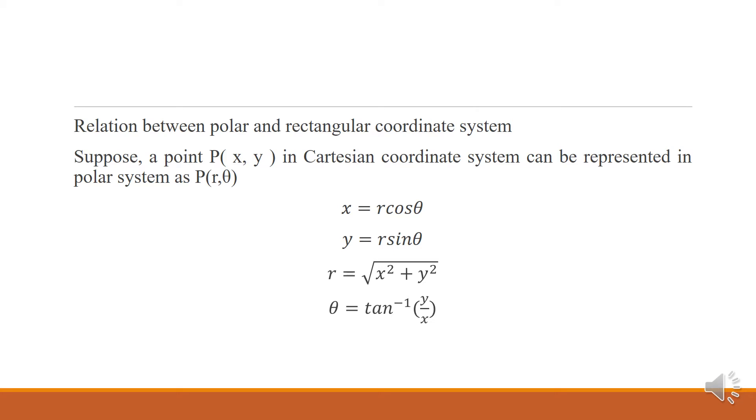So at the very first, relation between polar and rectangular coordinate system. Suppose a point in Cartesian coordinate system, it can be represented in polar system by P(r,θ). And the transformational equations are: x equals r cos θ, y equals r sin θ, r equals square root of x squared plus y squared, and θ equals tan inverse of y by x.